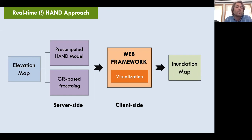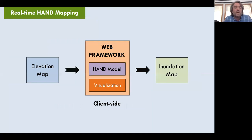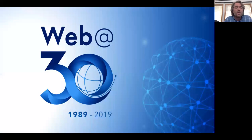Our goal is to eliminate server-side computation because we want full power on the user side, where users can entirely control map parameters and many other terrain characteristics. We have moved the HAND calculation entirely to the web — to the client side on the user's machine — without any downloads, running entirely inside the web application. Once you eliminate that process, lots of exciting opportunities start to emerge.